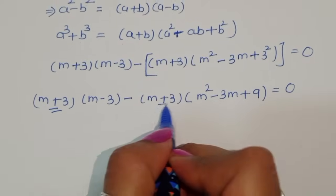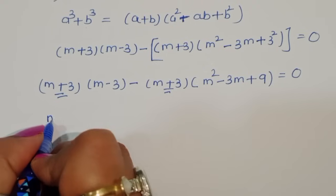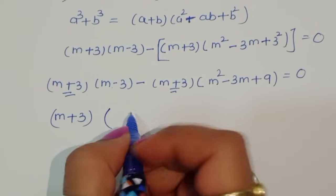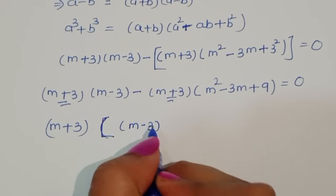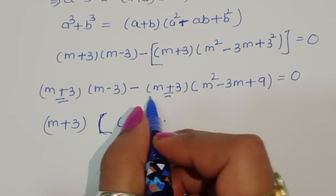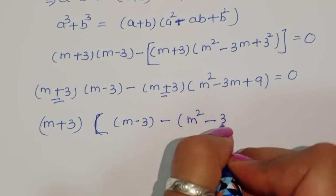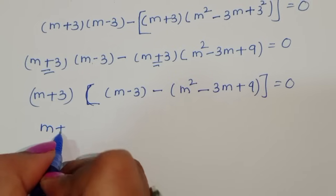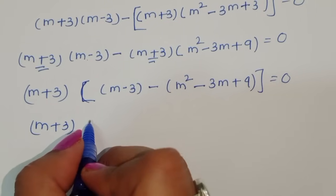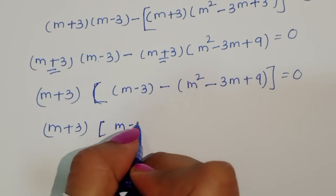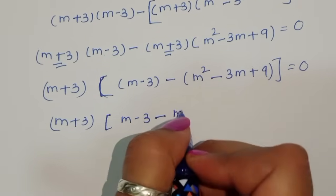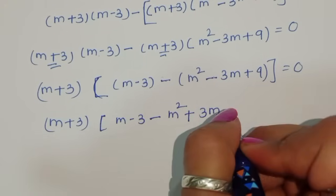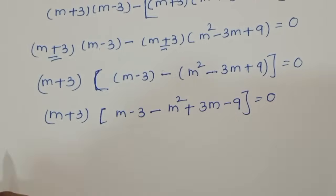We can see (m plus 3) is common in both terms, so we take (m plus 3) common. That gives us (m plus 3) times [(m minus 3) minus (m squared minus 3m plus 9)] equals zero. Opening the bracket: (m plus 3)(m minus 3 minus m squared plus 3m minus 9) equals zero.